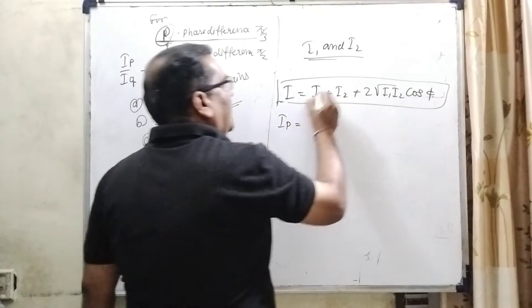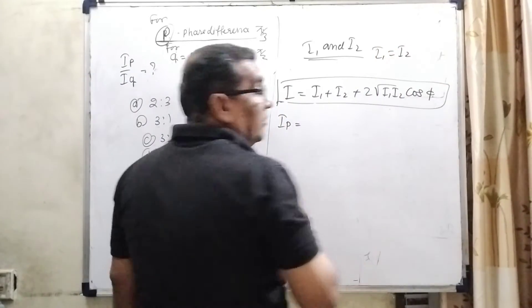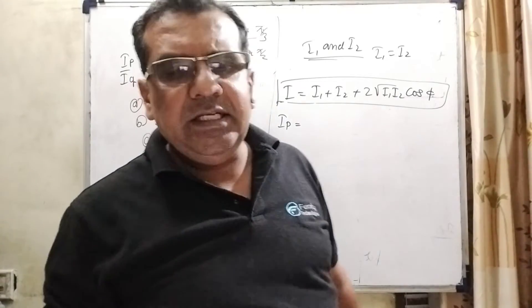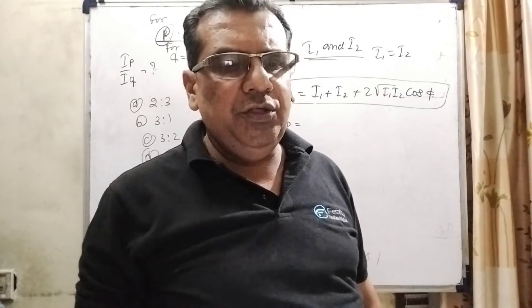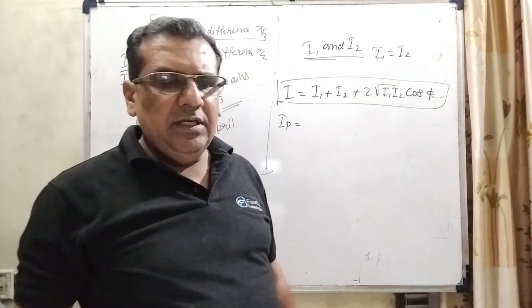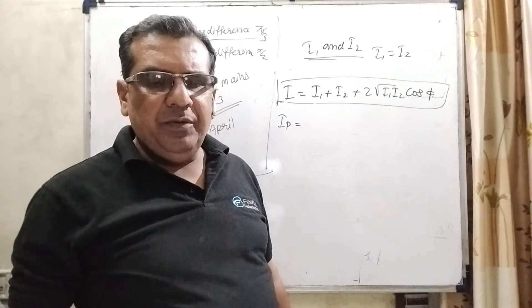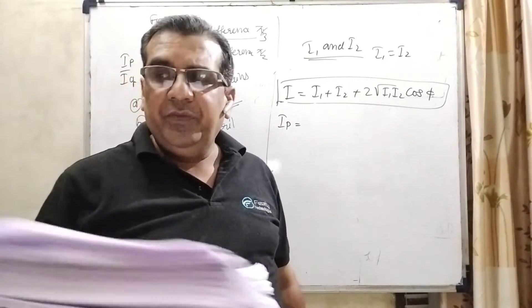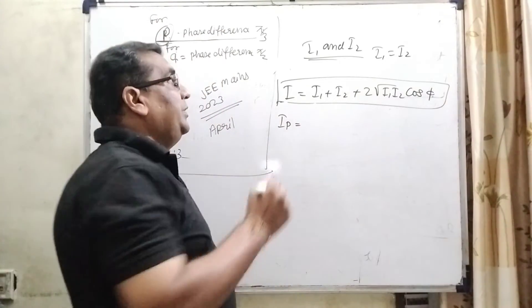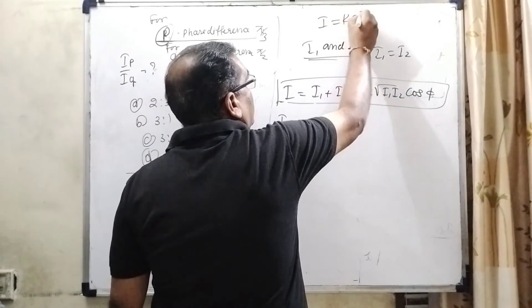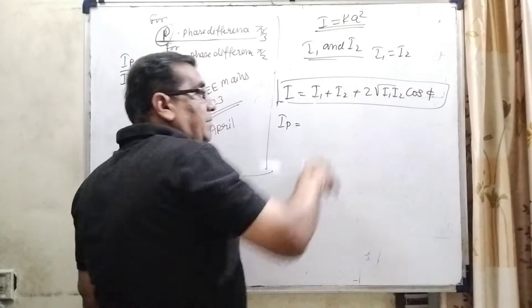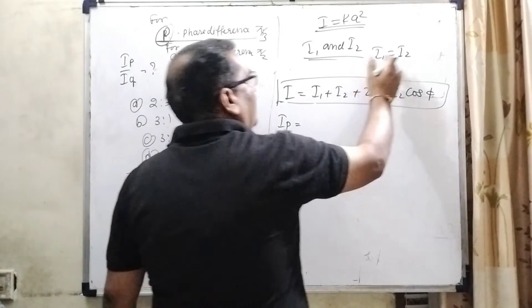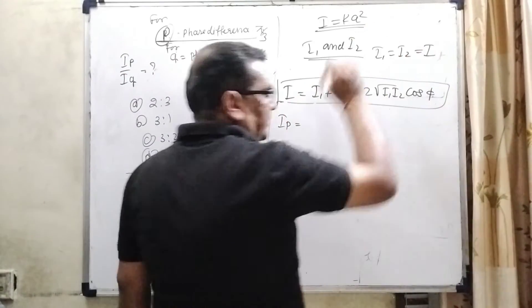Here, given that I1 equal to I2. Where is it given? In the question, here the ratio of intensities at point P and Q on the screen, in a Young's double slit experiment where phase difference between the waves of same amplitude. Here, given that same amplitude because I is equal to K A square. So here the same amplitude, it means same intensity. So here I1 equal to I2, let us consider this as I.